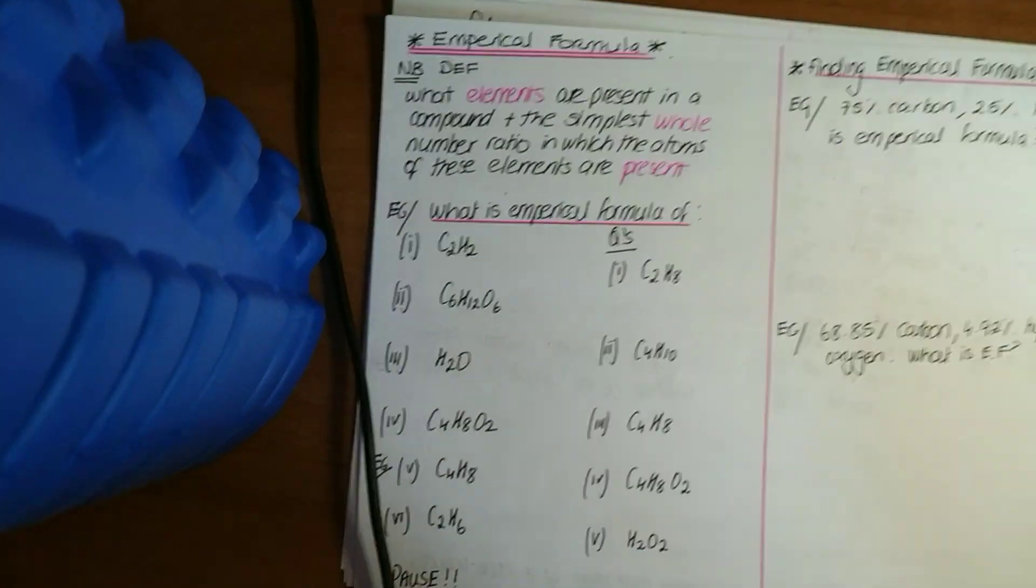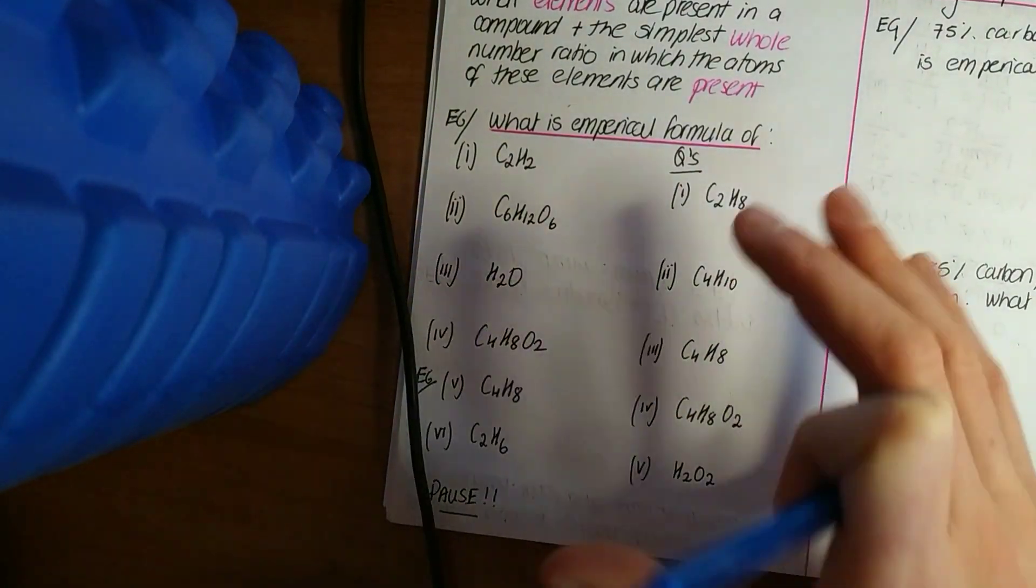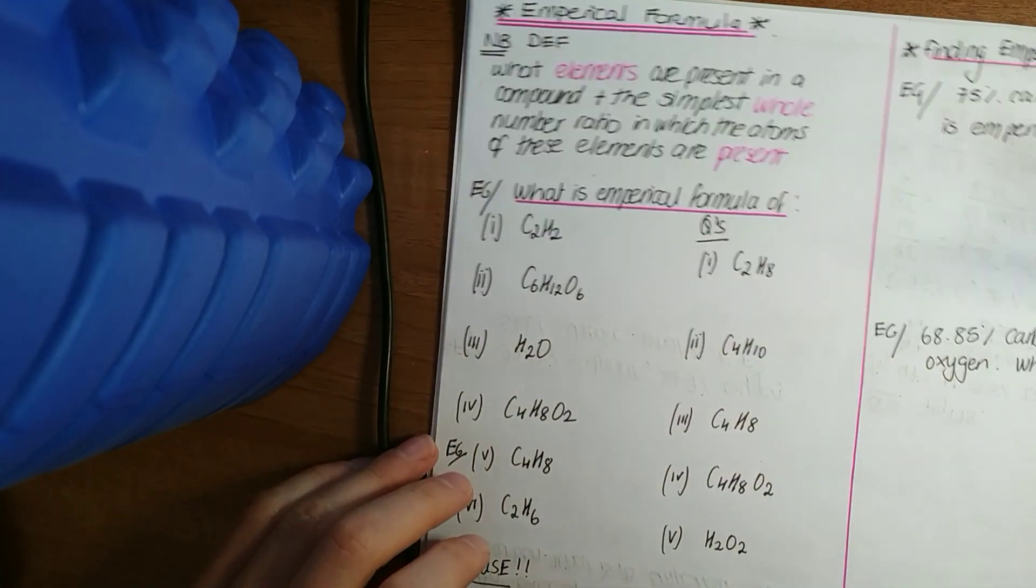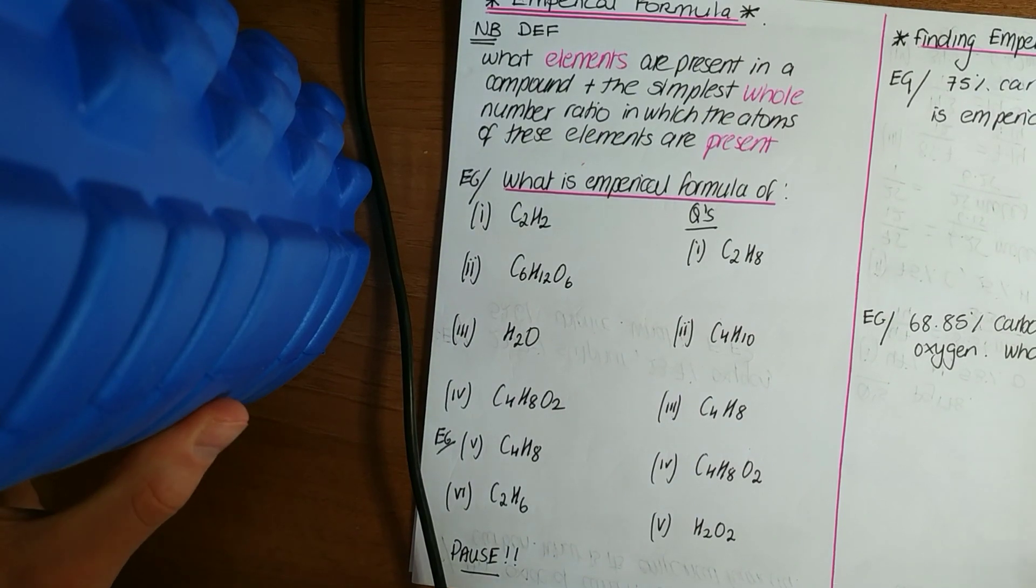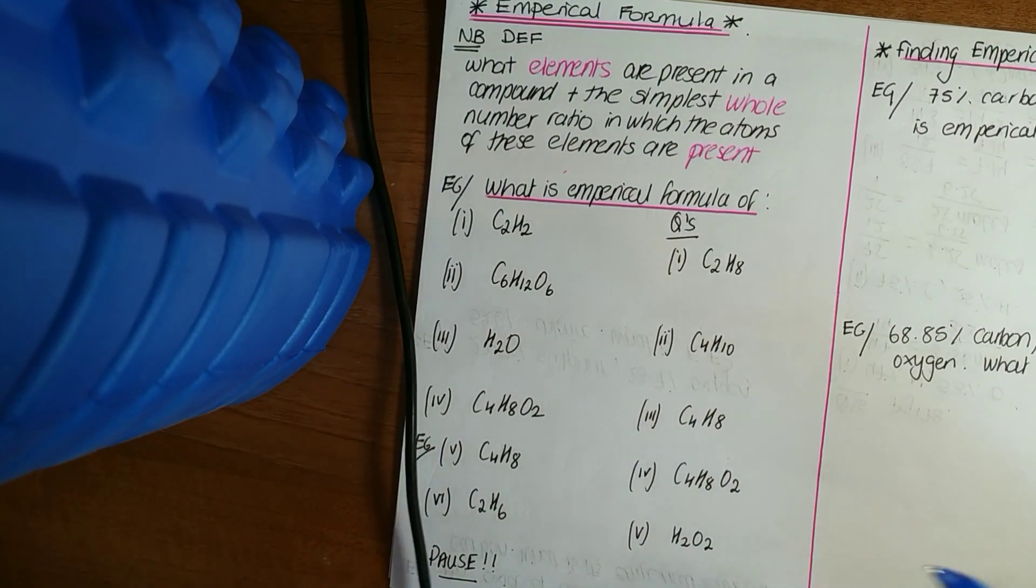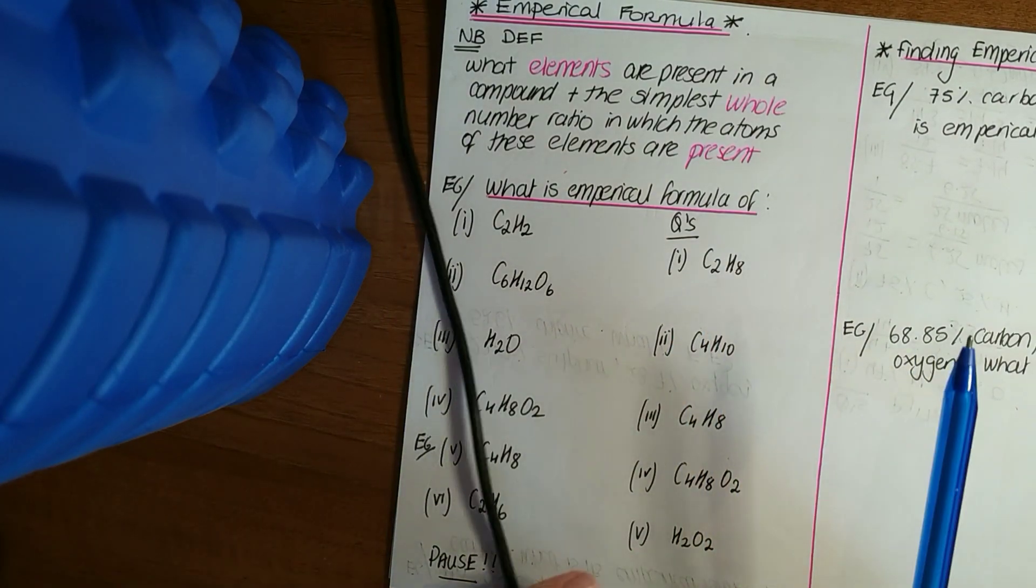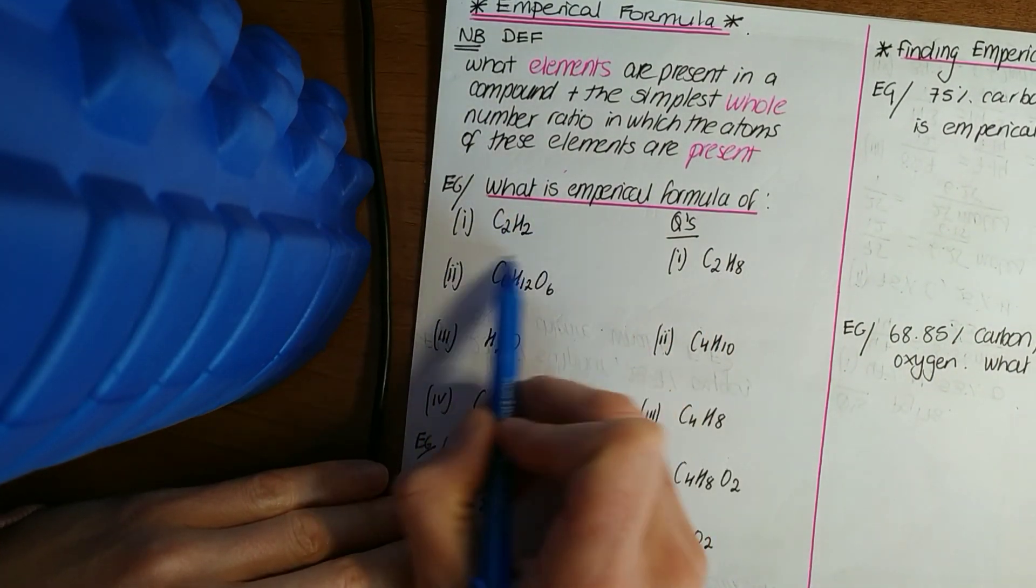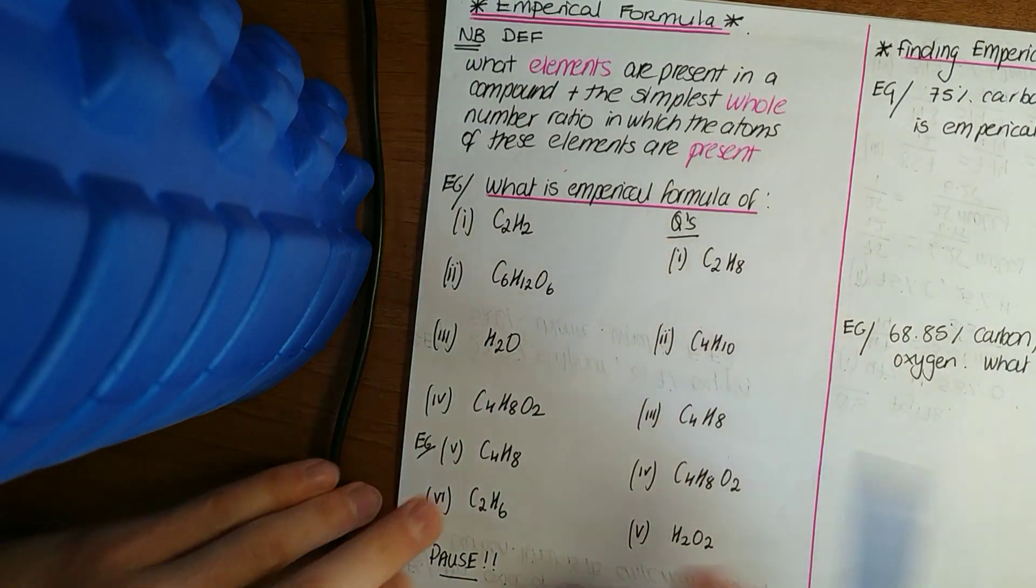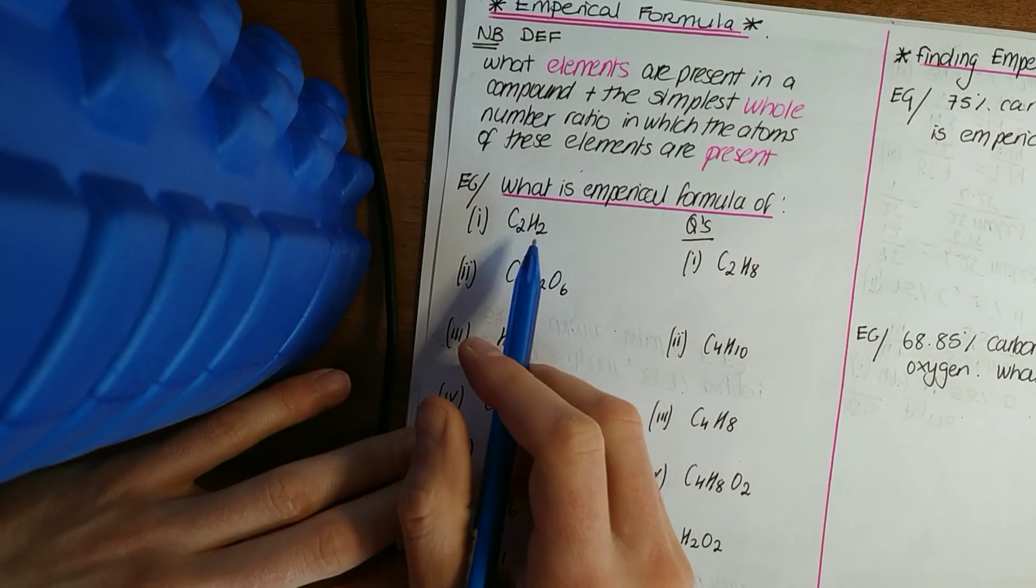Right, we'll move on now. So this thing known as the empirical formula. What the empirical formula tells us is what elements are present in the compound and the simplest whole number ratio in which these elements are present. So there's what's known as a molecular formula - it gives us the actual number of elements that are present in a compound. The empirical formula just simplifies that down.